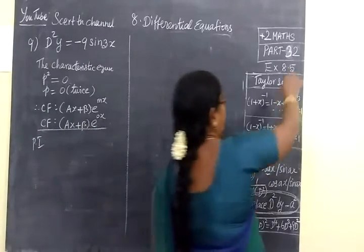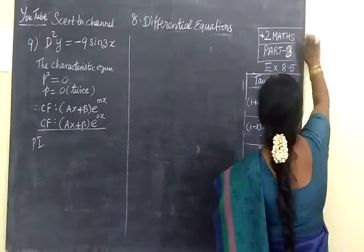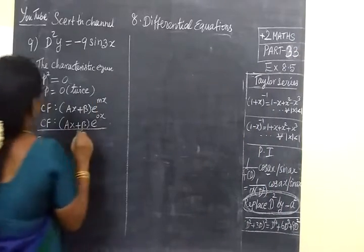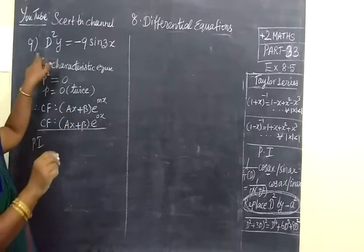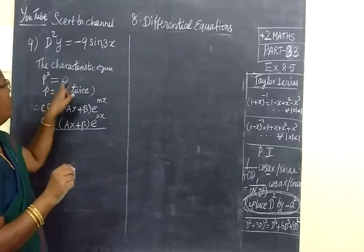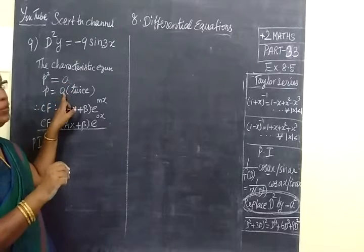Now we see exercise 8.59. For time saving, I will have written this. The characteristic equation is P² = 0, so P = 0.